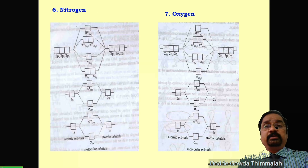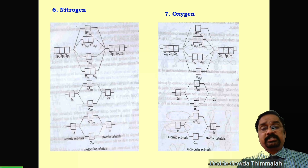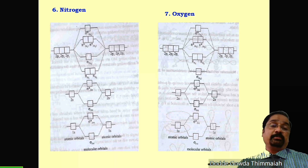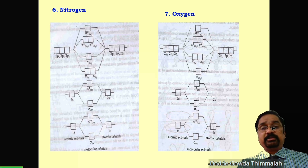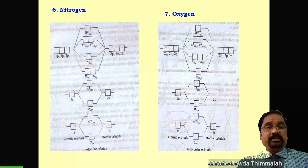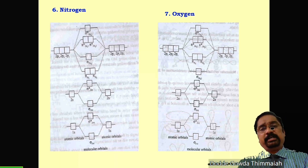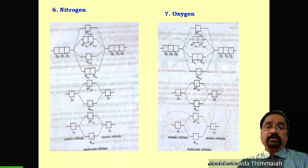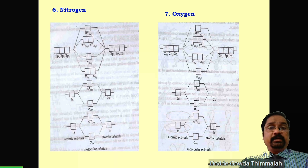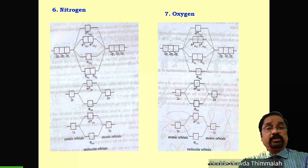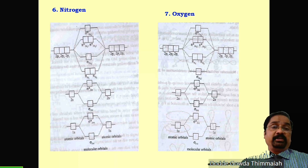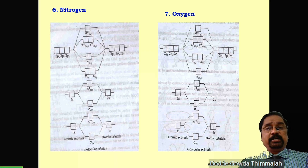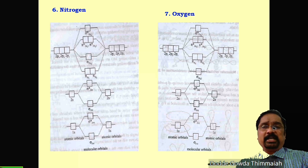In nitrogen, the MO filling order is: σ1s, σ*1s, σ2s, σ*2s, then π2px and π2py come before σ2pz. In oxygen (atomic number greater than 7), the order changes: σ2pz comes first, then π2py and π2pz follow. This difference is most important when filling electrons. This much synopsis is enough — let us now solve questions one by one.